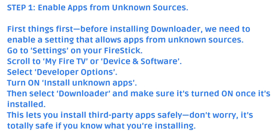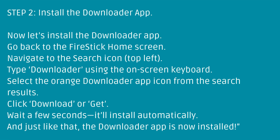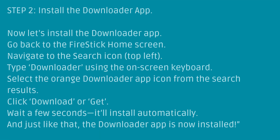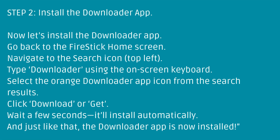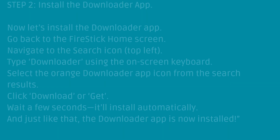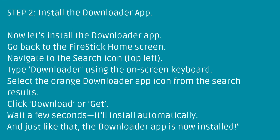Don't worry — it's totally safe if you know what you're installing. Step 2: Install the Downloader app. Now let's install it. Go back to the Fire Stick home screen, navigate to the search icon, and type Downloader using the on-screen keyboard. Select the orange Downloader app icon from the search results, then click Download or Get. Wait a few seconds — it'll install automatically. And just like that, the Downloader app is now installed.